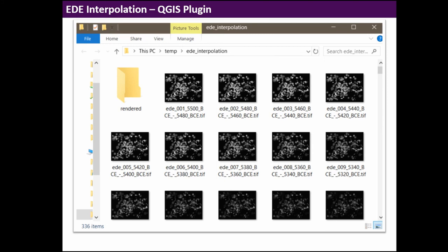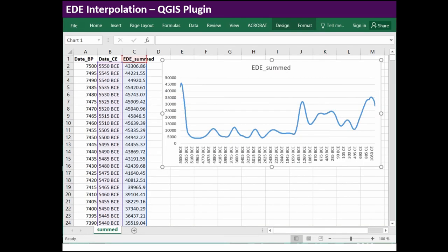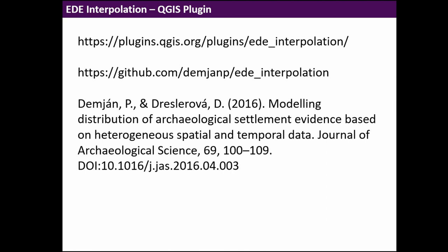It also produces GeoTIFFs in floating point accuracy that you can use for further analysis, and it produces a rendered version which can be used to produce nice animations. Lastly there's the summation in the CSV file, so you have the date BP/BC, some value in the highest possible temporal resolution that the radiocarbon calibration curve permits. This could be used as a proxy for exploring fluctuations in settlement density. Thank you for your attention. Here are some links if you want to try this out yourself.